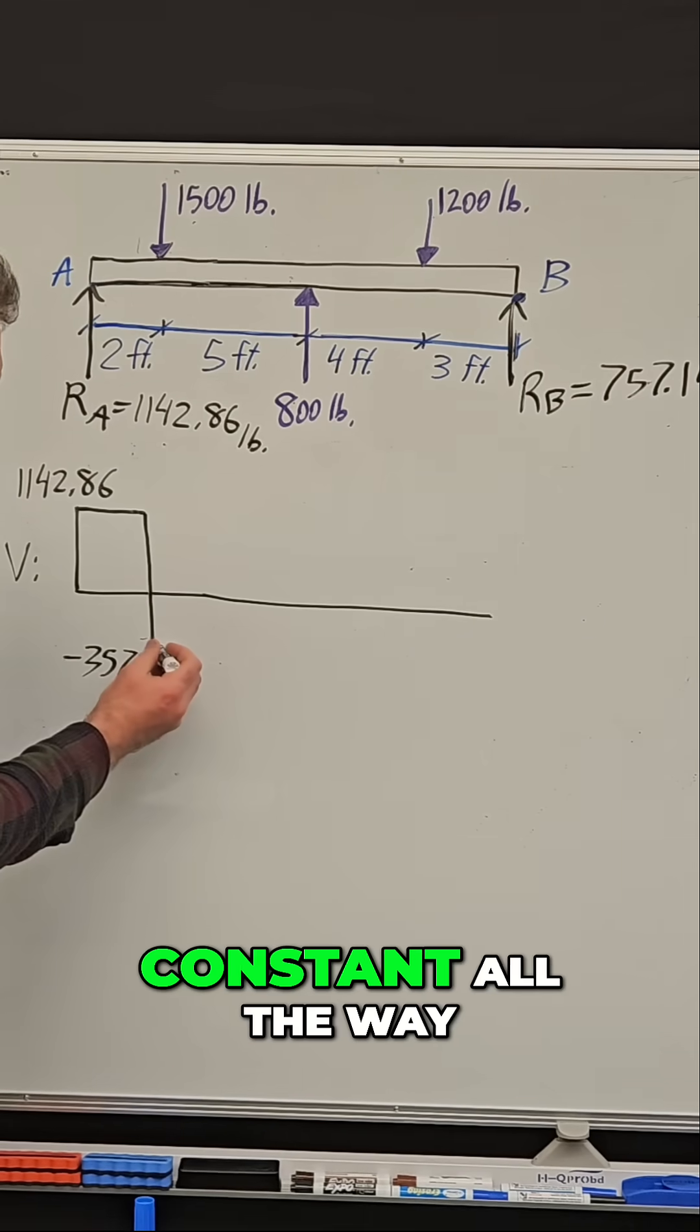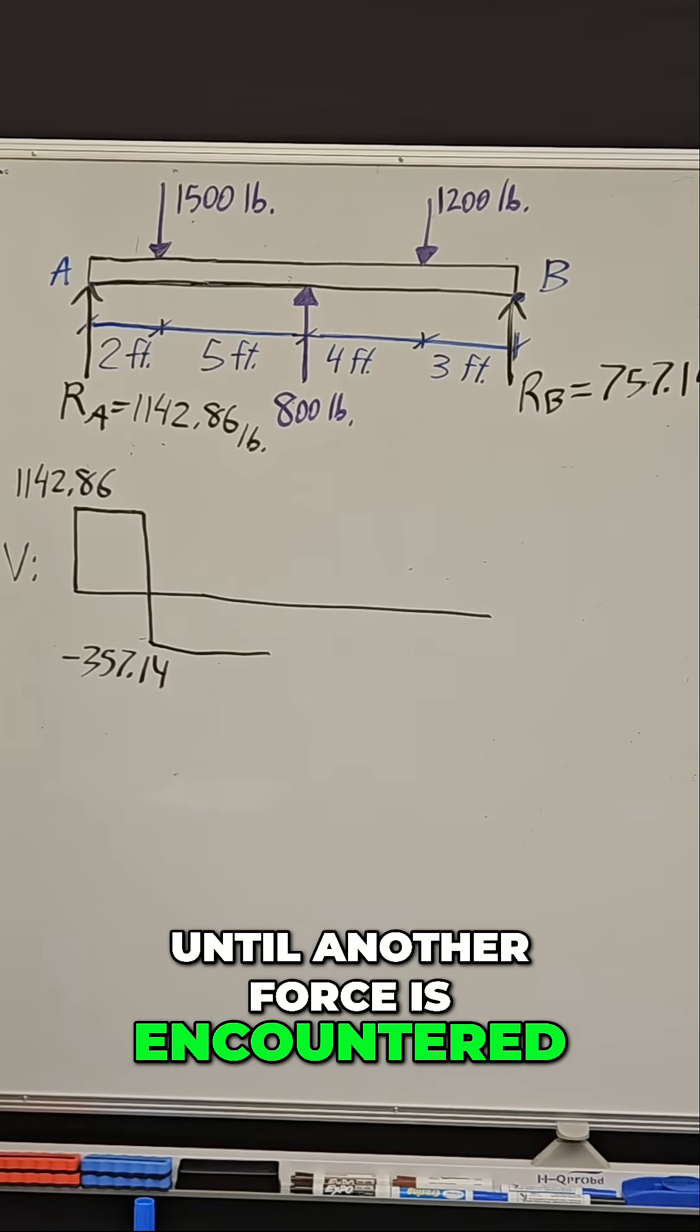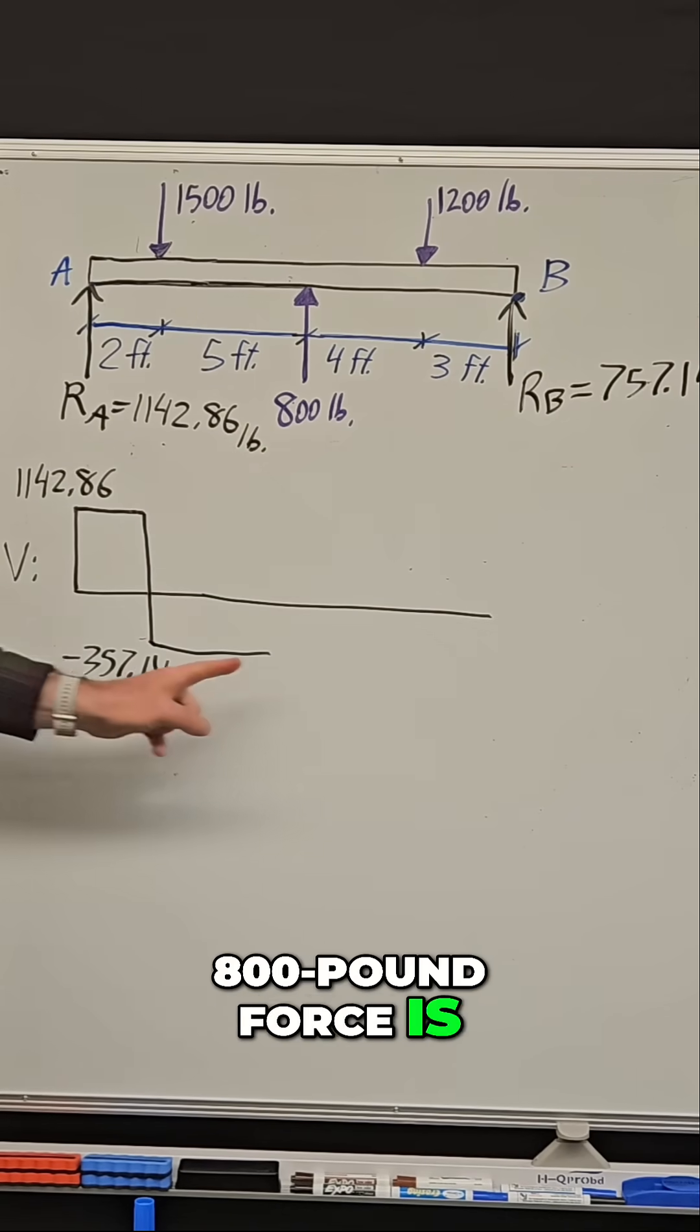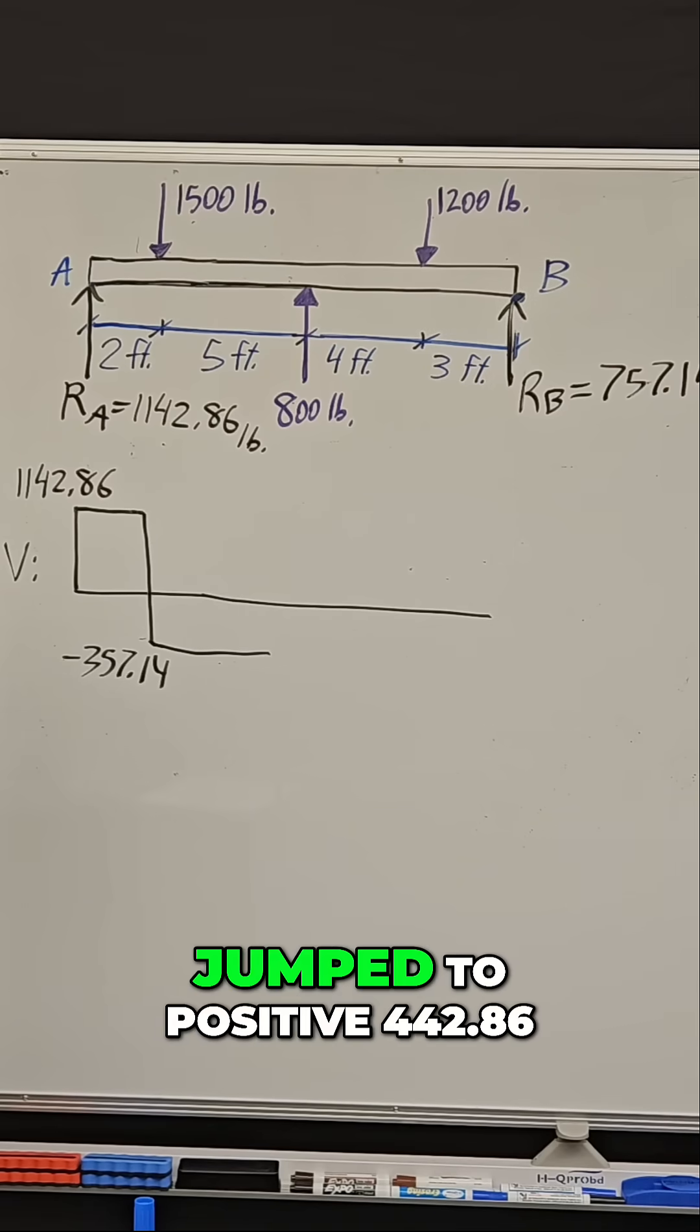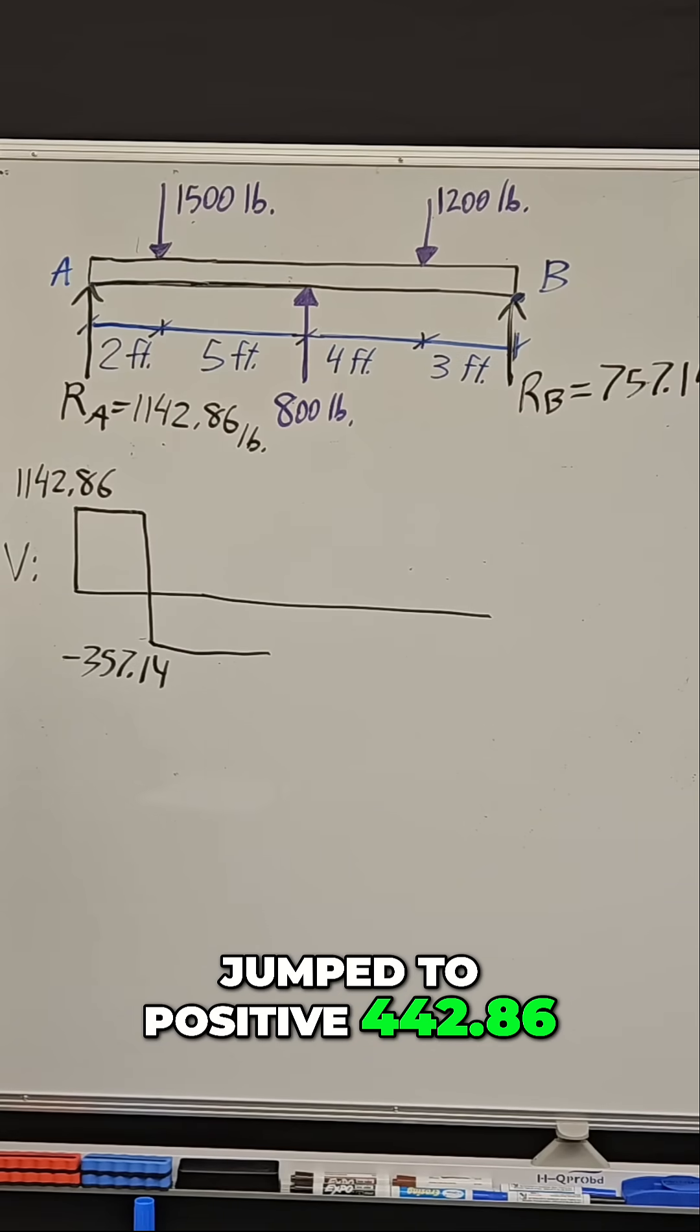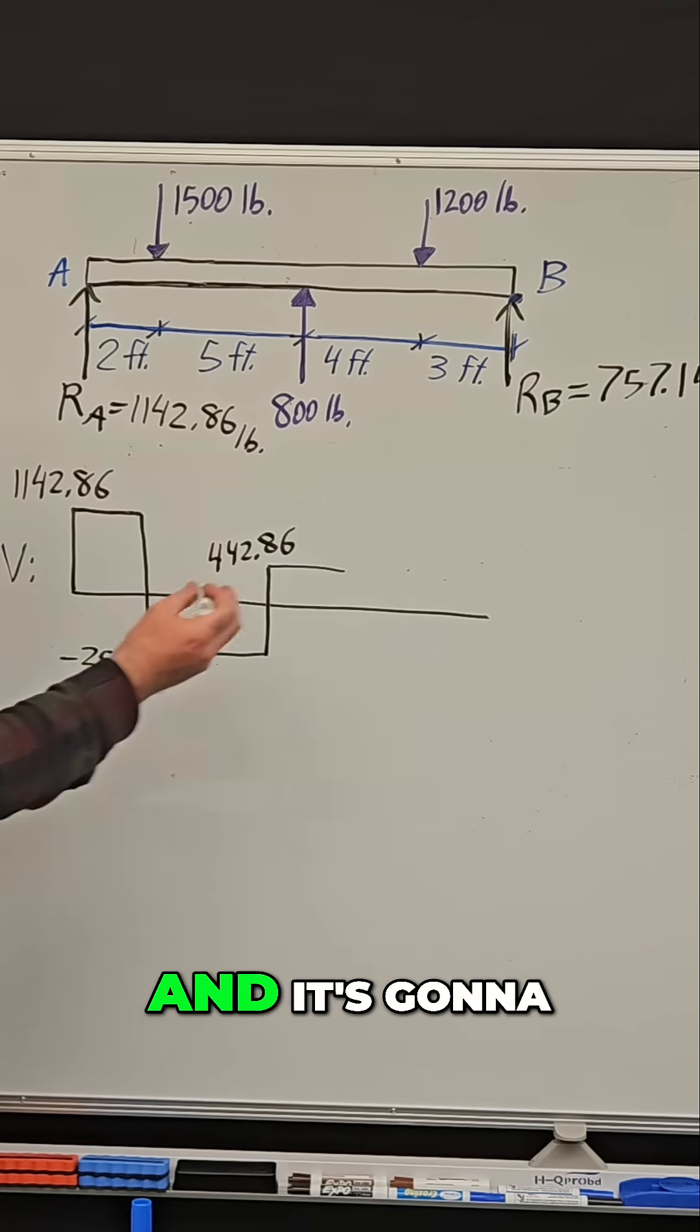Remember that shear is going to be constant until another force is encountered. This upward 800 pound force is going to cause the shear to jump up by 800, and now it's jumped to positive 442.86.